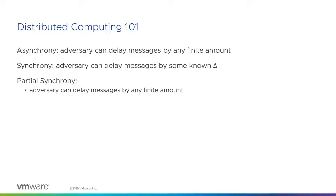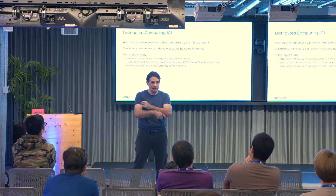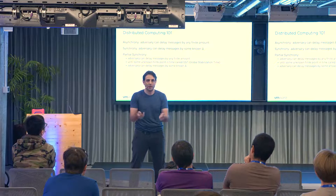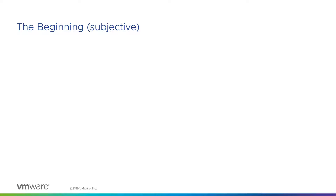Partial synchrony gives a middle ground between synchrony and asynchrony. In the beginning the world is completely asynchronous — the adversary can do whatever it wants — but the system must eventually stabilize. There is some unknown point in time called GST where things stabilize and the system becomes synchronous. This models a world where 99% of the time the system is synchronous and 1% there are extreme events you want your system to withstand.